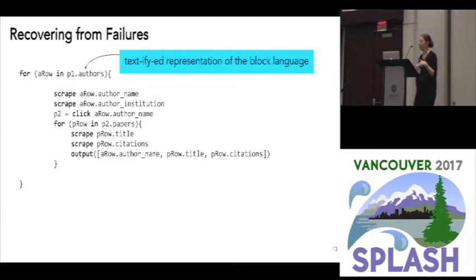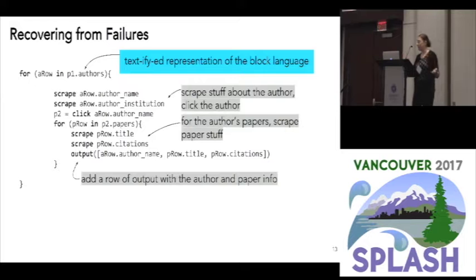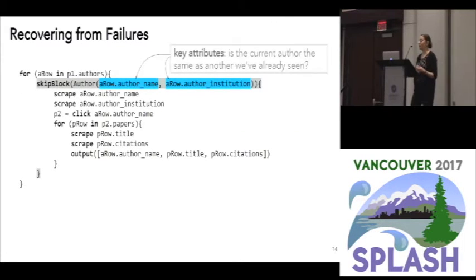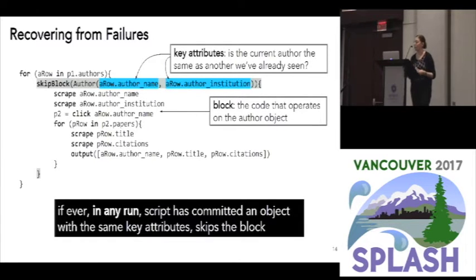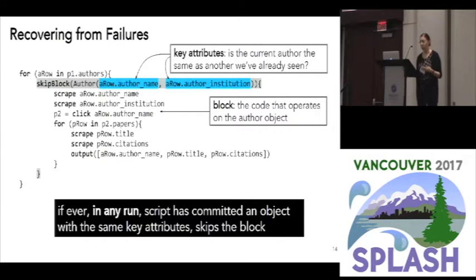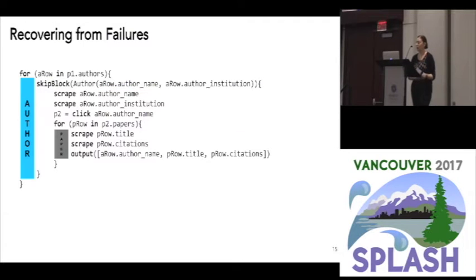It's clear how this handles duplicates — we see a duplicate Craigslist listing and skip over it. But how does this help us handle failures? Here's the textified representation of our program: it grabs some author information, some paper information, adds it to our output dataset. All we're going to do now is slot in a skip block. This tells us: if we see an author with the same name and the same institution as an author we've seen before, assume it's the same author. The block associated with the author — grabbing info about the author and all their papers — is what we're going to skip if we've already done that work in any previous run of the script.